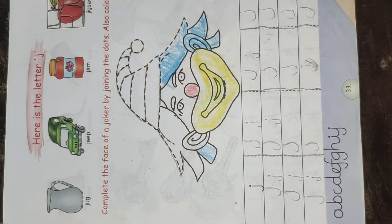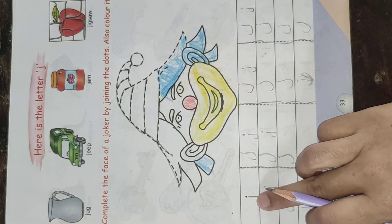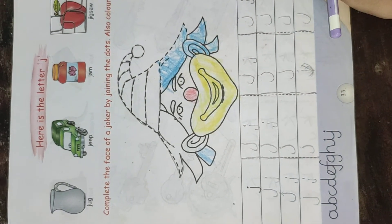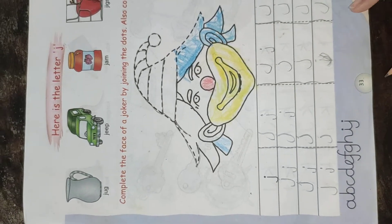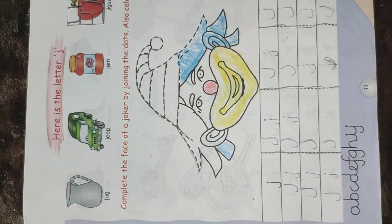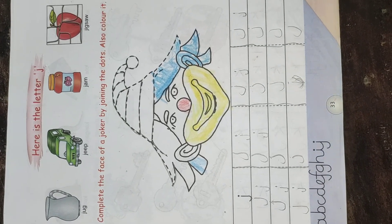Okay children, so I hope all of you understood how to write J. Now you all complete page number 33 in your integrated activity book. Thank you.